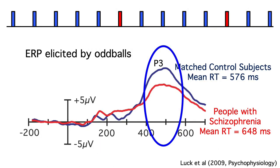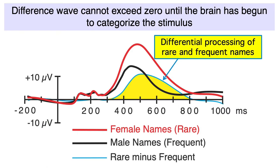But when you record ERPs in an oddball paradigm, the peak of the P3 wave for the oddballs doesn't appear to be any later in the schizophrenia group than in the control group. That's interesting — response times are slowed, but the latency of the P3 doesn't appear to be slow. However, previous studies focused on the oddball trials, not the rare-frequent difference wave. As you'll recall from a previous video, the rare-frequent difference wave can't exceed zero until the brain has begun to determine whether the stimulus belongs to the rare category or the frequent category. The latency of the difference wave therefore tells us about the amount of time required to perceive and categorize the stimuli.